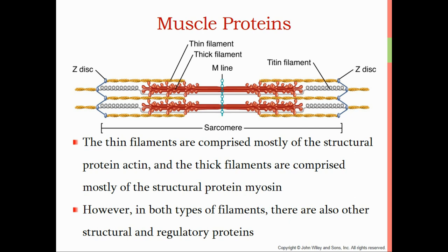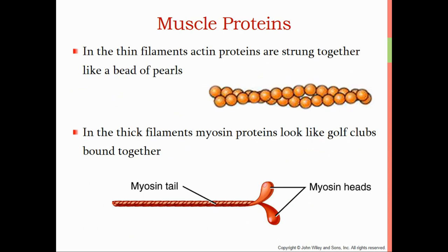The thin filaments slide across the thick filament — over top, underneath, left and right, all around. In the thin filament, actin proteins are strung together like a bead of pearls. In the thick filament, myosin proteins look like golf clubs bound together — one myosin protein with the heads or cross bridges separated from all the other myosin proteins. So the thick filament, even though we refer to it as one filament, is really made up of a bunch of myosin proteins all bound together.